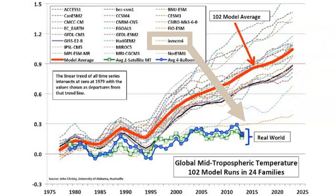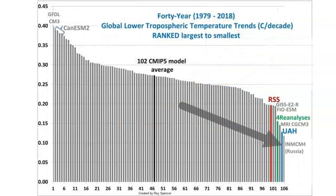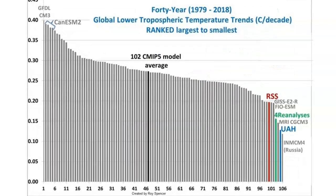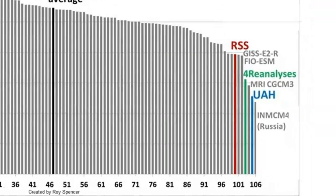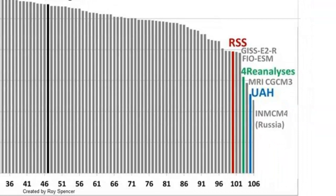Now let's go back to the bar chart which shows the relative accuracies of all 102 climate models. Here is the Russian model again. And now a short description about these other colored lines — they are not climate models, but observed temperature data.